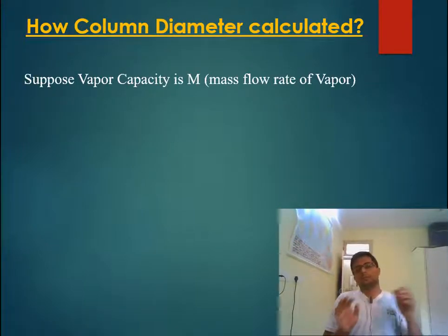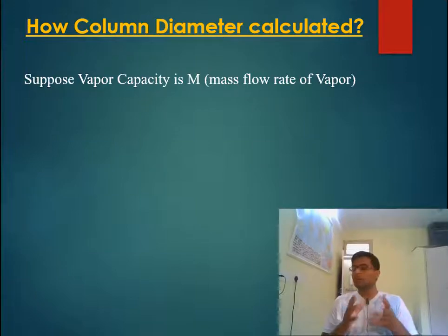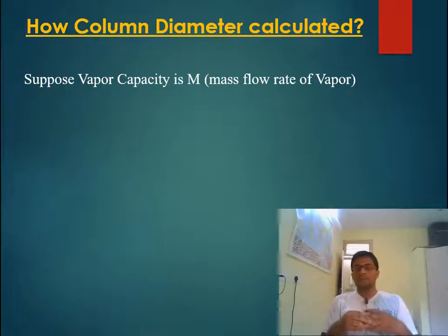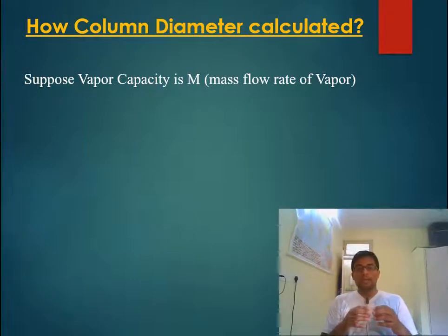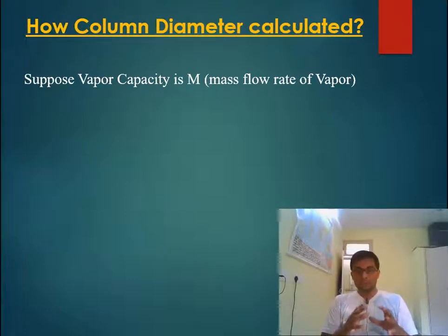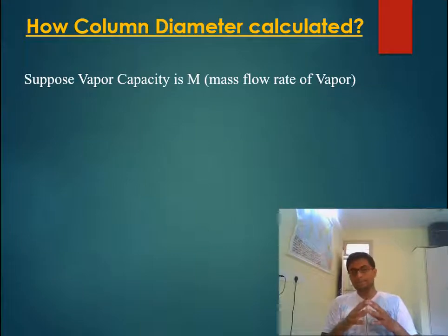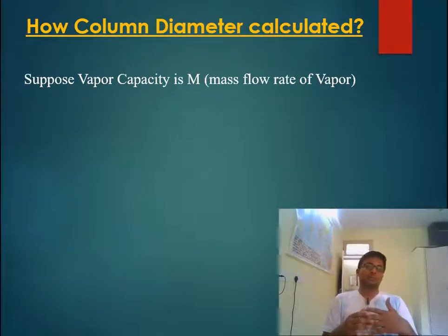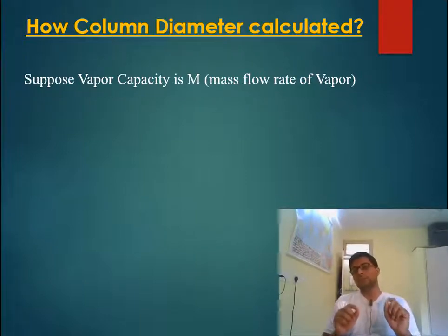Let us first discuss how column diameter is calculated. In any design course in your undergraduate curriculum, you would have studied that column diameter is usually decided by vapor capacity, while liquid capacity determines the number of passes. So column diameter is basically decided by vapor capacity.